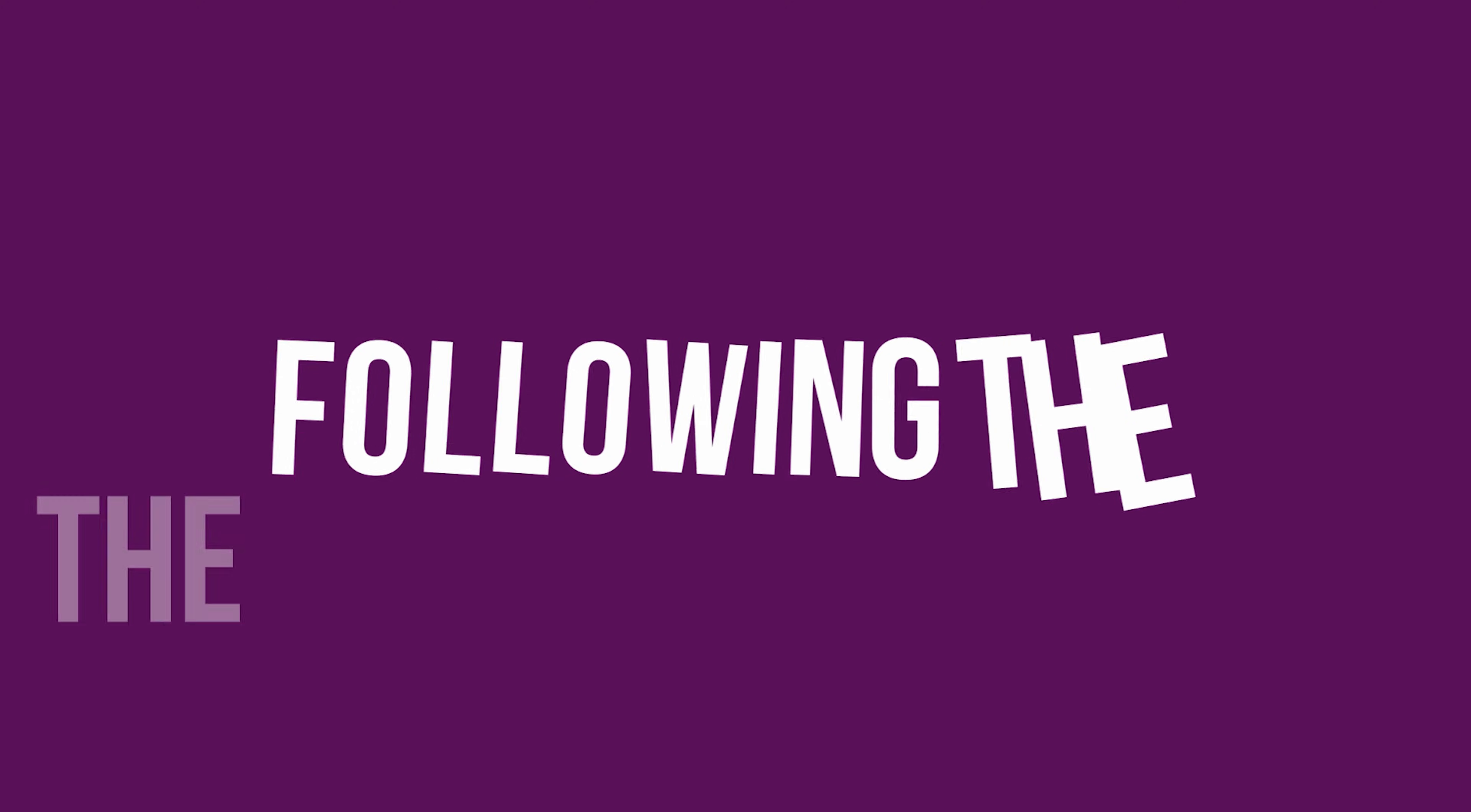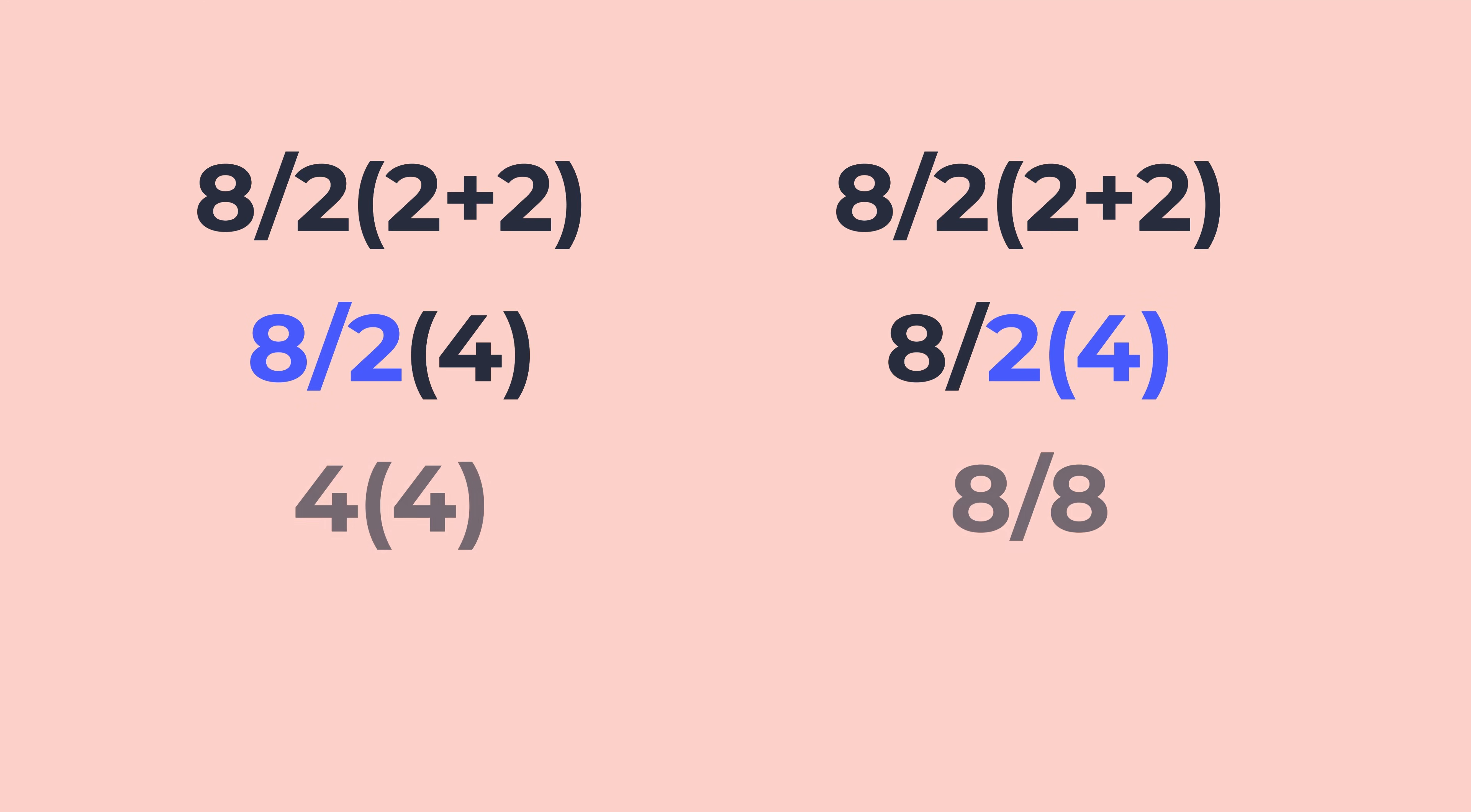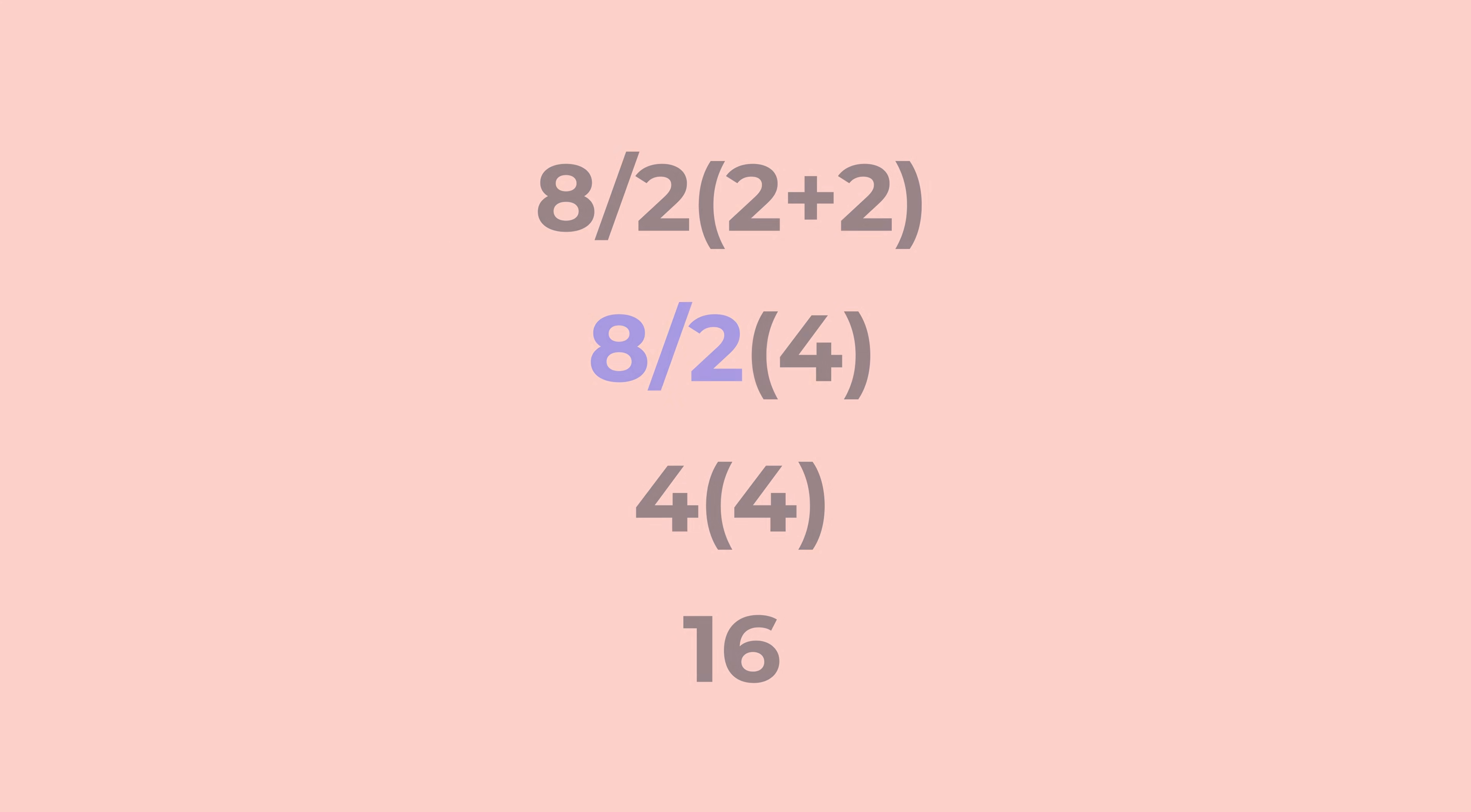By following the order of operations and processing the equations step by step, we ensure accuracy and consistency. A common point of confusion arises from the equal precedence of multiplication and division. In some cases, people mistakenly prioritize multiplication over division, leading to an incorrect answer. However, both operations should be treated equally and performed from left to right.